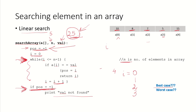If position is minus 1, I will print that the value was not found. This is the case when the value that we were looking for is not present in the array. What can be the best case of linear search? The best case would be when I found it at the first element — meaning I just had to make one comparison. So this is order of 1; best case time complexity would be O(1).